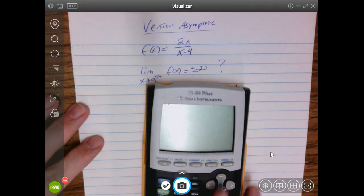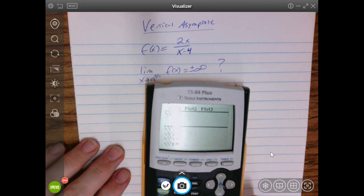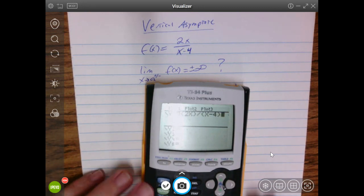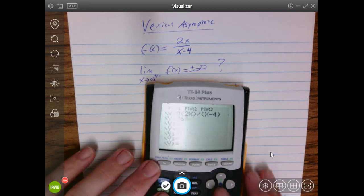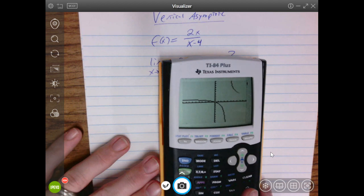Let's take a look at the graph. Make sure that that is reasonable with what we've just determined. So I have 2x divided by x minus 4. Standard window here. Get rid of the glare. Maybe that way. There you go.